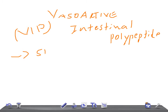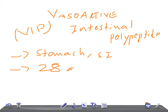VIP is secreted in the stomach and small intestine, and a small amount is also secreted in the large intestine. This vasoactive intestinal polypeptide contains 28 amino acid residues. The stimulant for VIP secretion is the presence of acid chyme in the stomach and the intestine.